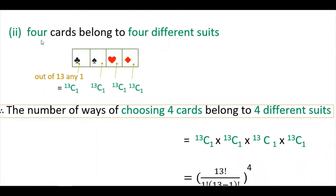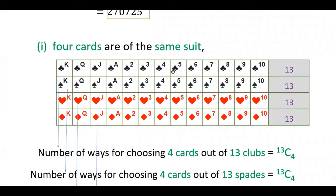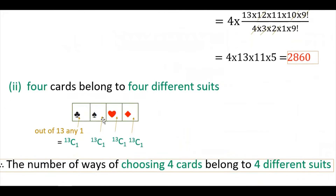The next question: 4 cards belong to 4 different suits. We have to choose 4 cards from 52 such that each card is from a different suit. Each suit symbol — club, spade, heart, diamond — should be represented. With each suit having 13 cards, you can choose any one card from each suit, but each card must have a different suit symbol.